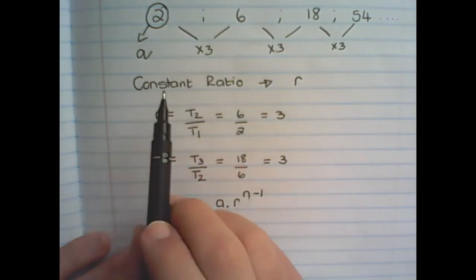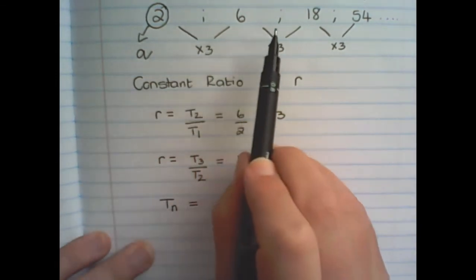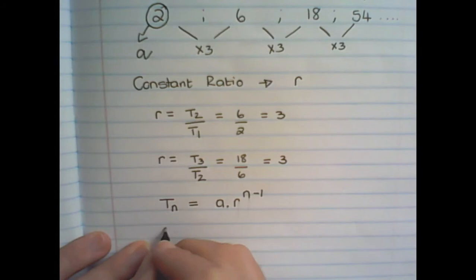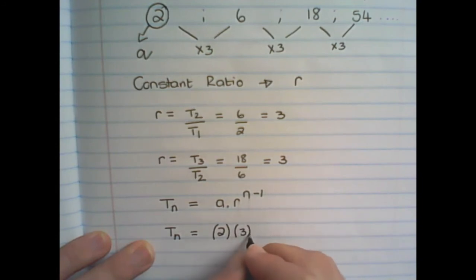So the general term, or the formula for this pattern, would be TN is equal to A, which is 2, times R, that is 3, to the power of N minus 1.